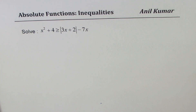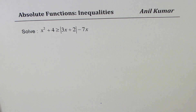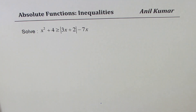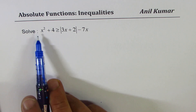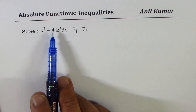Let me thank once again my subscribers for posting this excellent question. I'll share the solution and I hope many of you will benefit. This question is based on absolute function inequalities. We need to solve x² + 4 greater than or equal to the absolute value of 3x + 2 minus 7x.